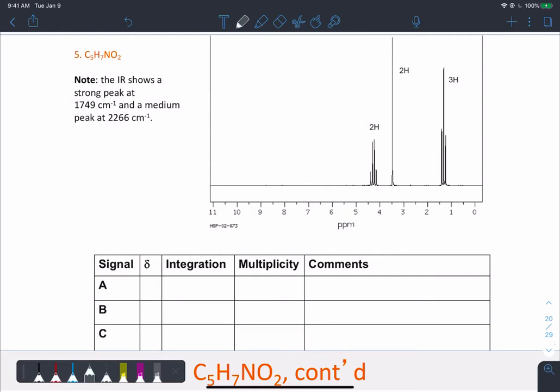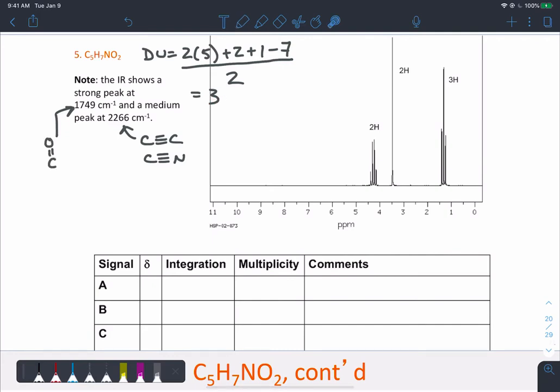Okay, so infrared information is given to us. Let's calculate degree of unsaturation first. So DU equals 2 times 5 plus 2, plus 1 for the nitrogen, minus 7 for the hydrogen atoms, ignore the oxygen, all divided by 2. So I see 3 degrees of unsaturation in there. Okay, this peak at 2266, not much that comes in the middle of the IR spectrum there. We're typically looking at either CC triple bonds or CN triple bonds, so an alkyl group or a nitrile group. And then a carbonyl group there. So that's our 3 degrees of unsaturation taken care of.